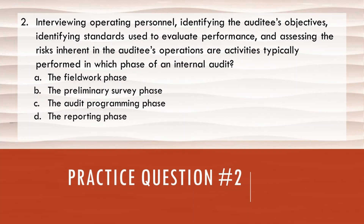A — the fieldwork phase — is not correct because the fieldwork phase is when we actually do our testing, so we need to know all this information before we begin fieldwork. C — the audit programming phase — is not the answer either because we need to interview personnel and identify their objectives prior to creating our audit program. D — the reporting phase — is the last step of the audit cycle, so we want to interview personnel and identify their objectives prior to reporting final conclusions. The answer is B — the preliminary survey phase. During the preliminary survey phase, we interview key process owners, identify their objectives, identify what standards and policies they use to evaluate effectiveness and efficiency, and assess risks to determine which areas to include in our audit program.